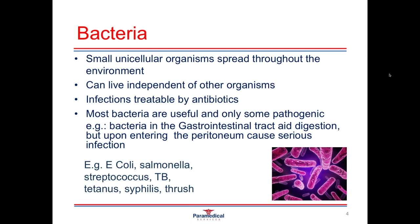A few examples of different types of bacterial infections are E. coli, salmonella, streptococcus, TB or tuberculosis, tetanus, syphilis, and thrush. You'll notice that with a lot of medical conditions or diseases, you might have a bacterial infection of that and a viral infection caused by different things. An example of this is meningitis — inflammation of the meninges running around the brain and spinal cord — which is a very serious condition and can be caused by either a bacterial or viral infection, defined as bacterial meningitis or viral meningitis.